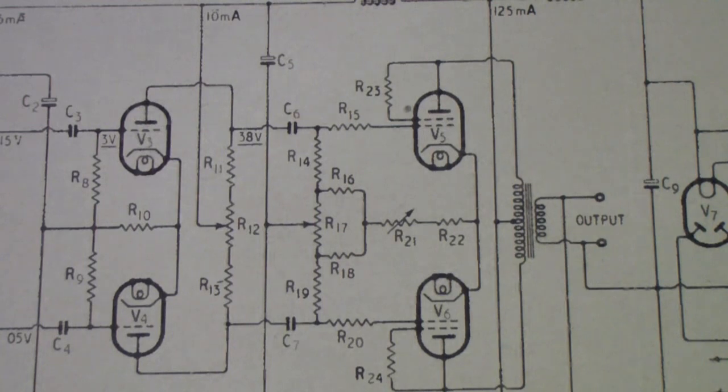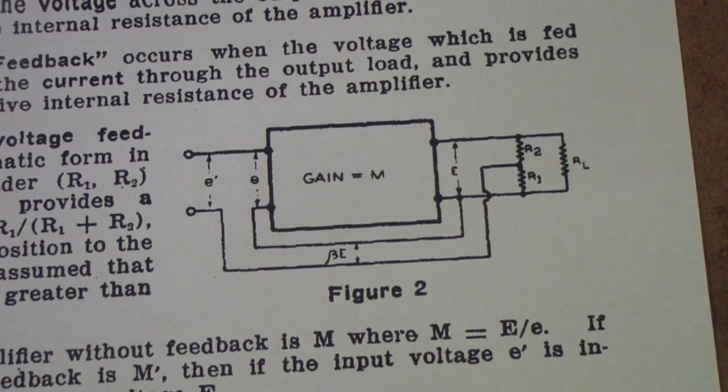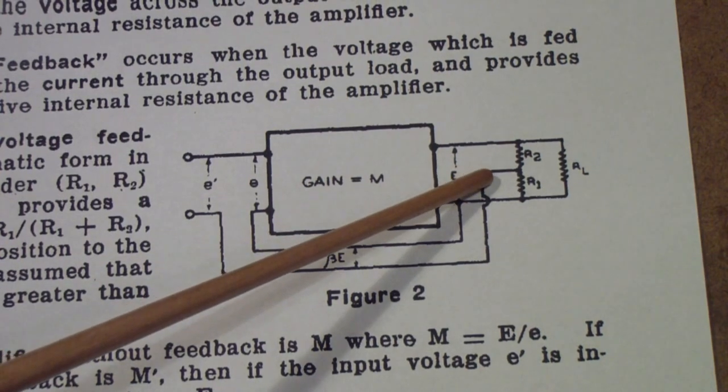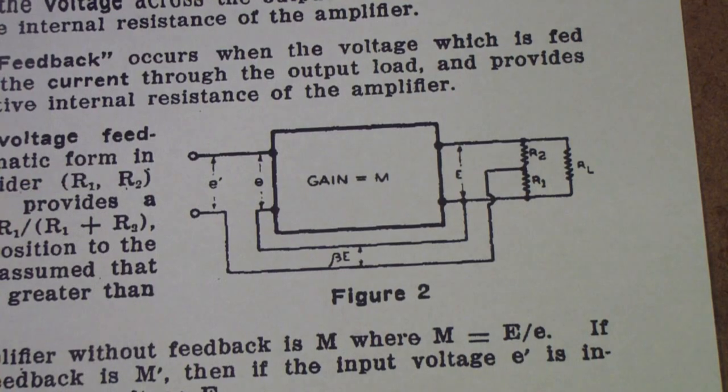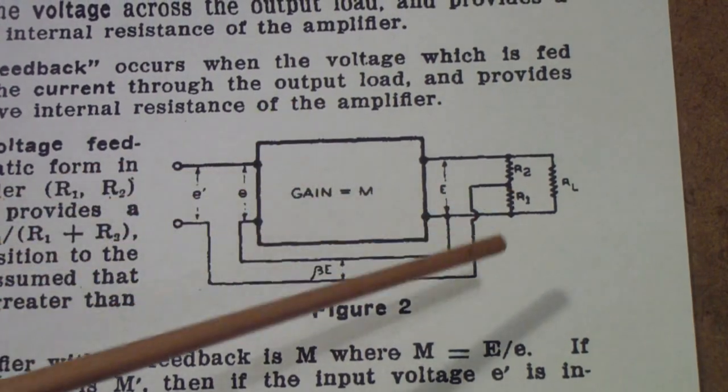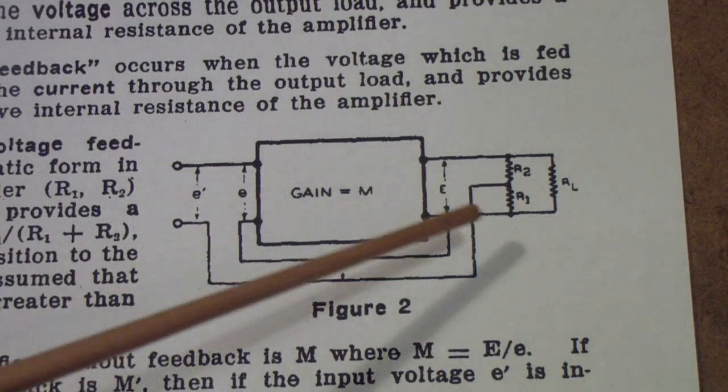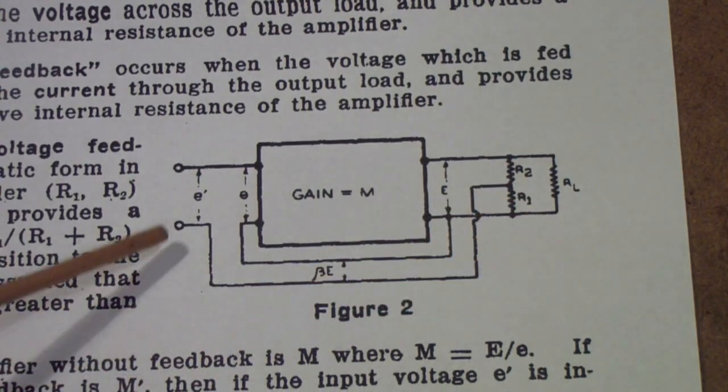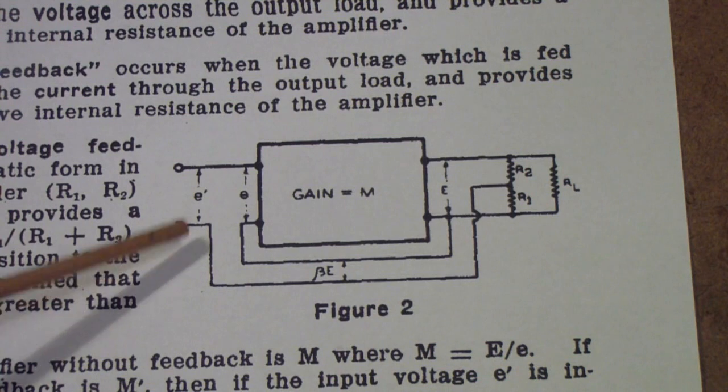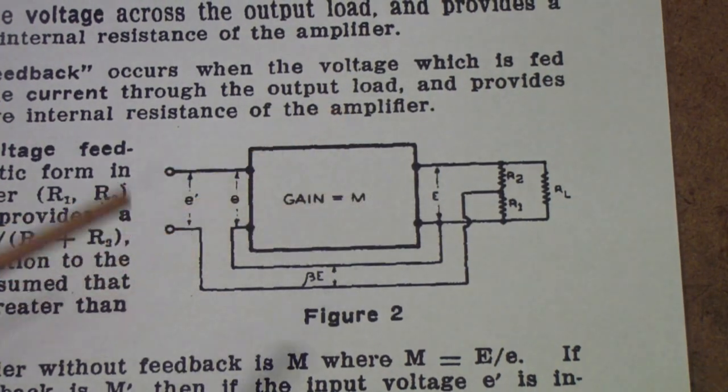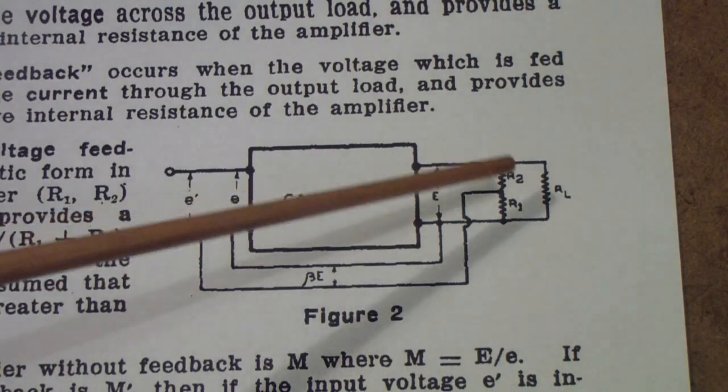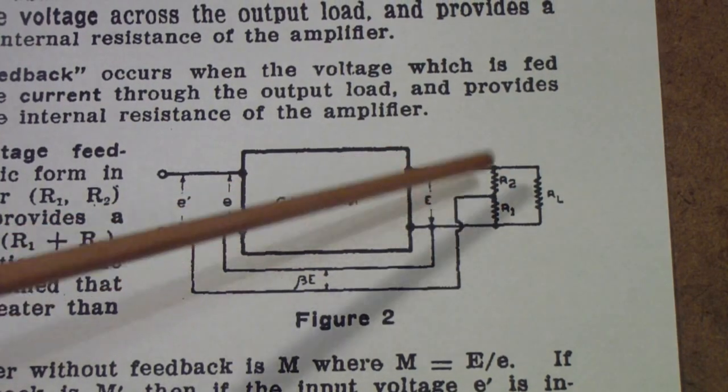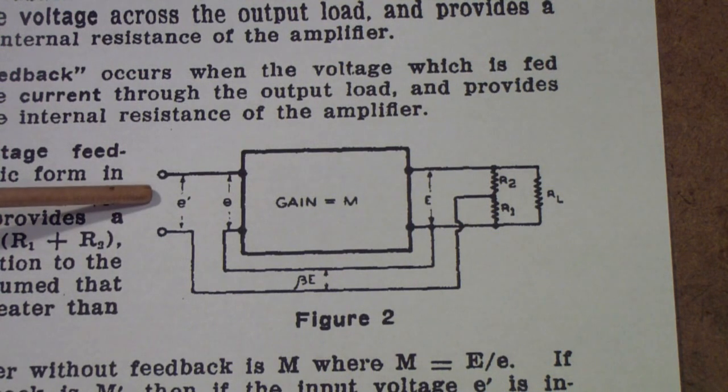The thing we will talk about next, though, is feedback. It's long been known that if you take a portion of the output signal and feed it back to the input, you can produce a variety of effects on the overall circuit. If the feedback is negative, that is, if the phase shift from input to feedback signal is 180 degrees, then the feedback signal subtracts from the input signal. Therefore, the gain of the amplifier goes down, but you get a great many other benefits. The distortion goes down dramatically, the output impedance of the amplifier goes down dramatically, and the input impedance of the amplifier goes up.